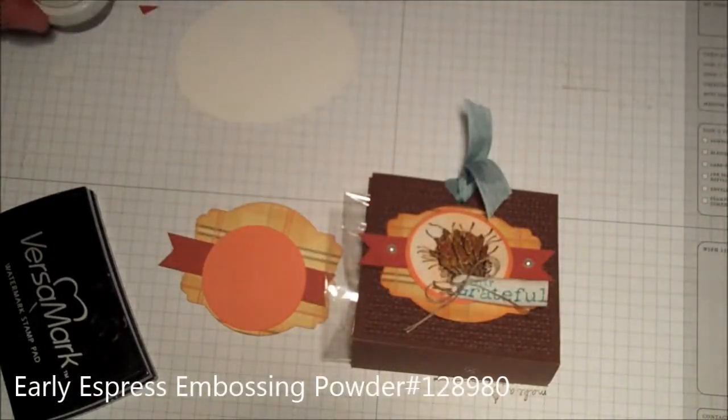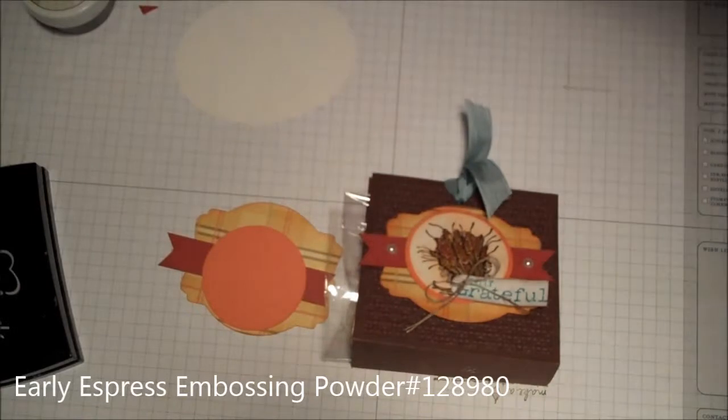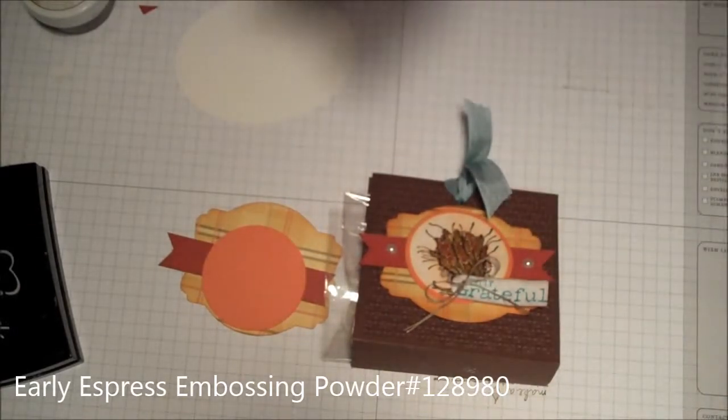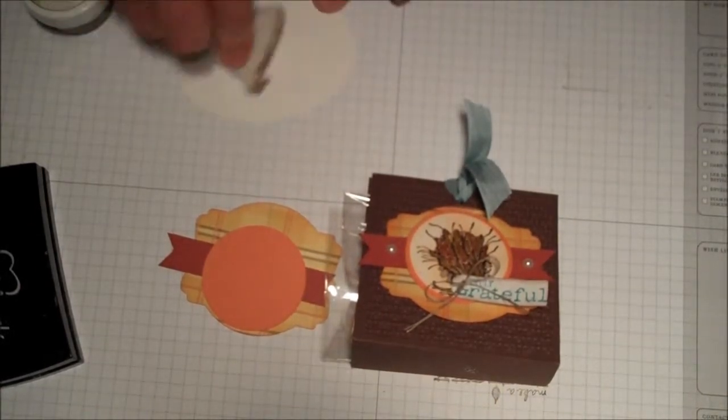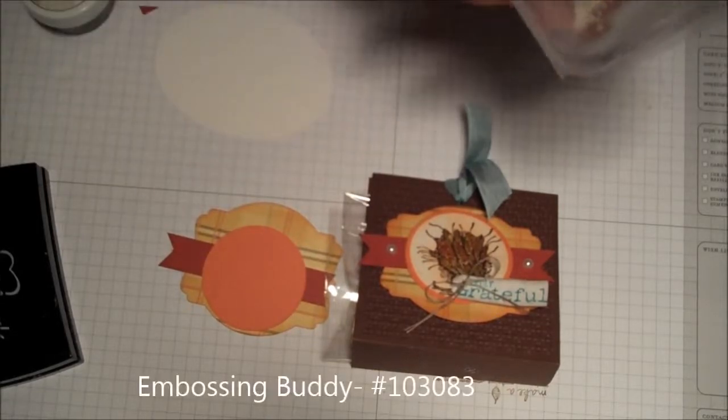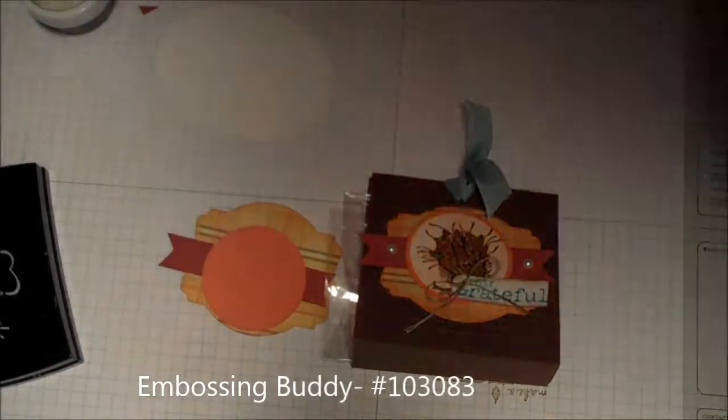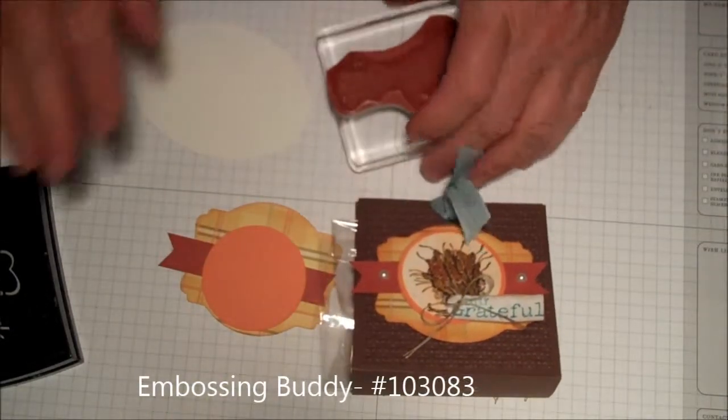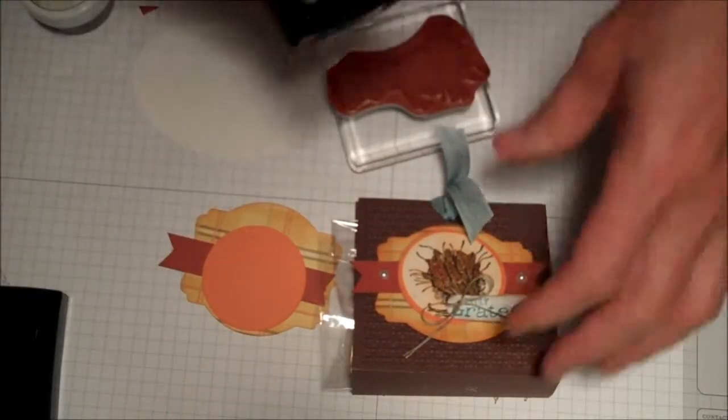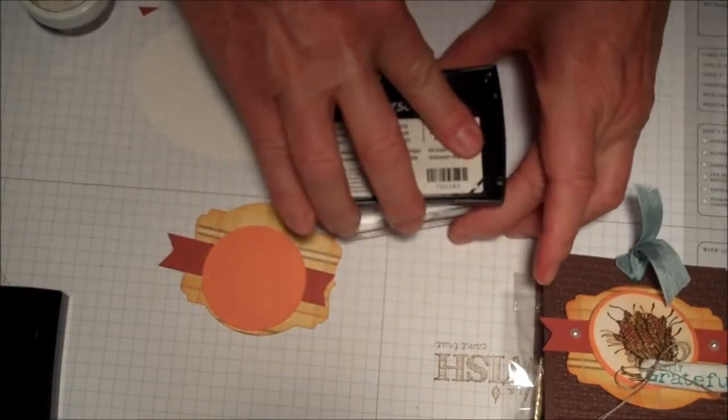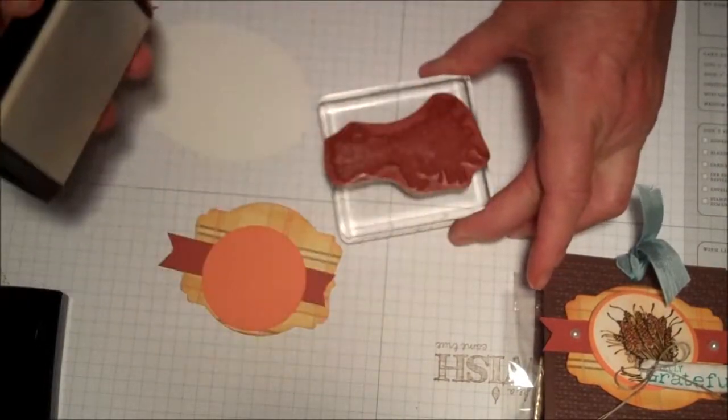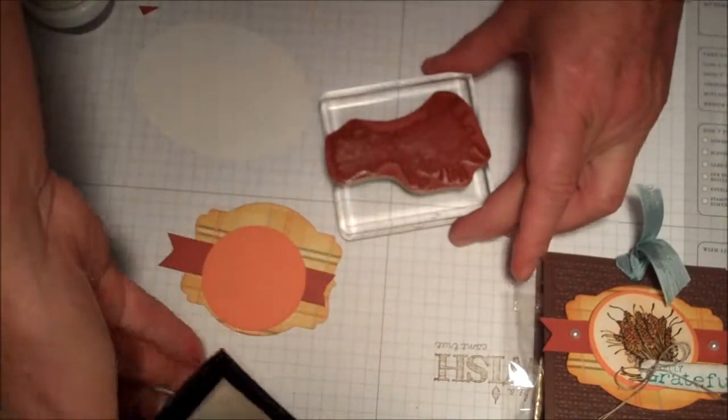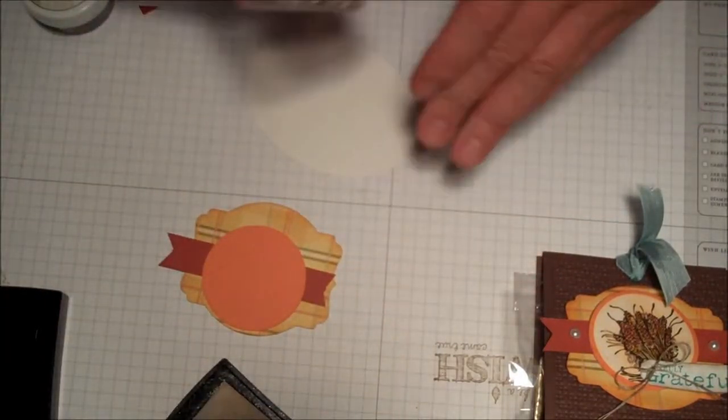The first thing you want to do is take your embossing buddy and go over the cardstock that you're going to emboss. Next, grab the stamp you're going to use and ink it up. I always do it upside down because I like to see how much ink gets on that stamp. I know it's good and inked, I'm happy.